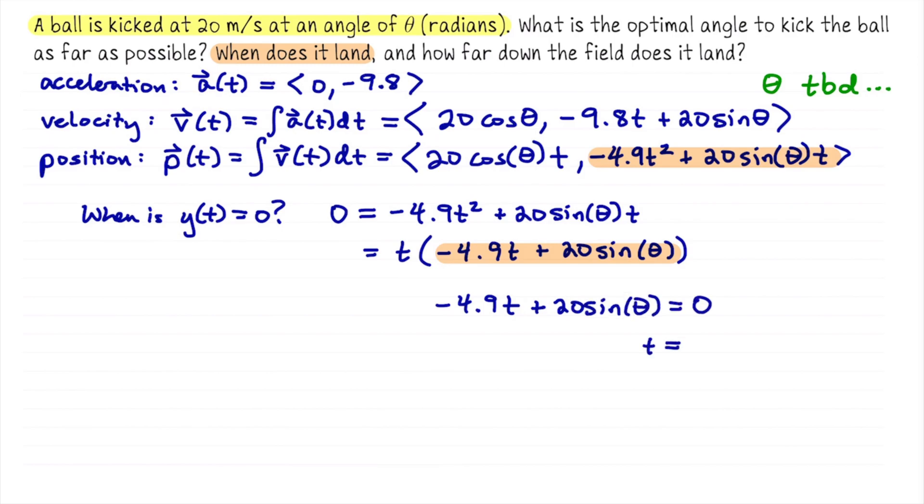Isolating t, we find that t at the landing points, maybe I'll denote it t sub l, is 20 sine of theta divided by 4.9. Notice that's in terms of the unknown angle theta. Different angles will produce different landing times. We still have to work out what theta is, so we'll just leave this as a formula for the landing time in terms of theta. Pause if you're still writing this down.